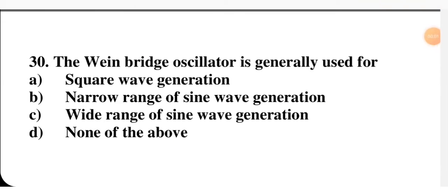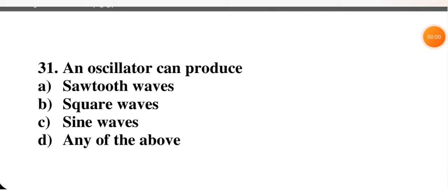The Wien bridge oscillator is generally used for — square wave generation, narrow range of sine wave generation, wide range of sine wave generation, or none of the above? Please remember, the Wien bridge oscillator is used for a narrow range of sine wave generation. So option B is the correct option.